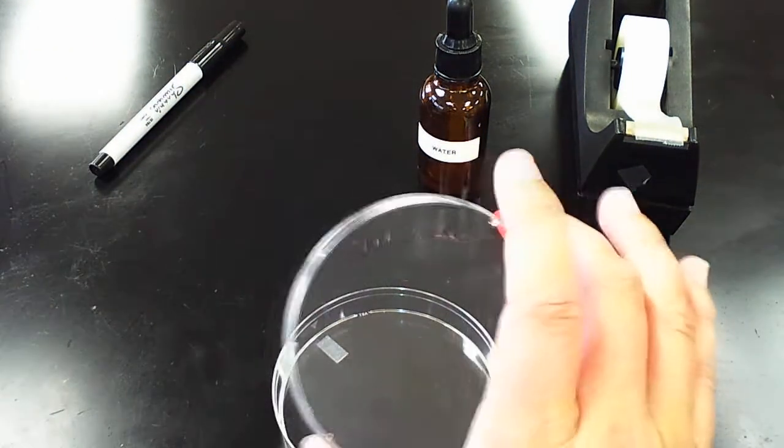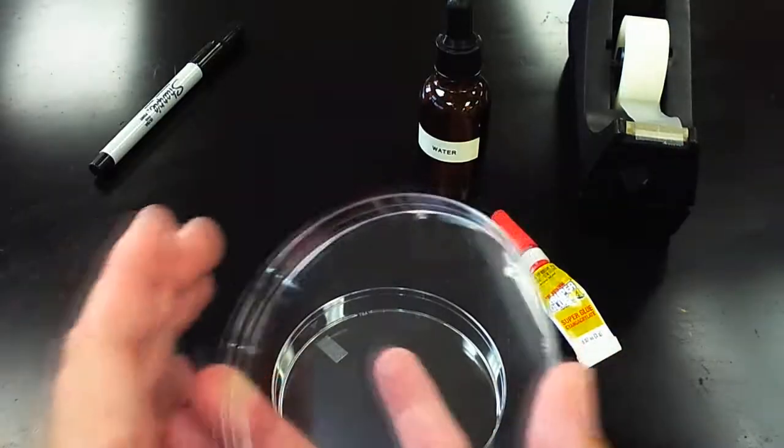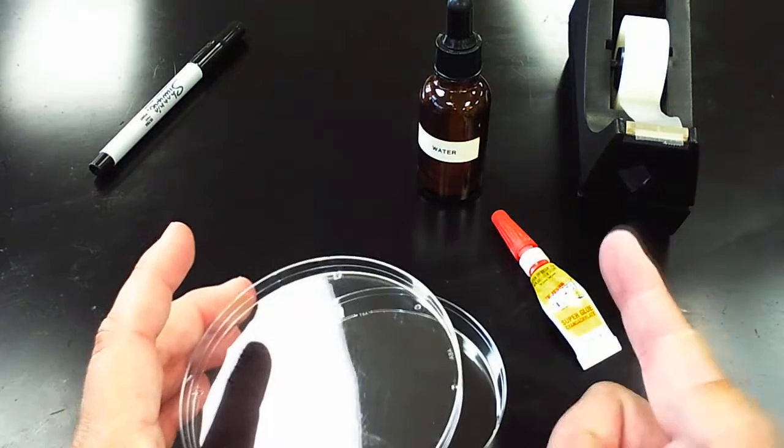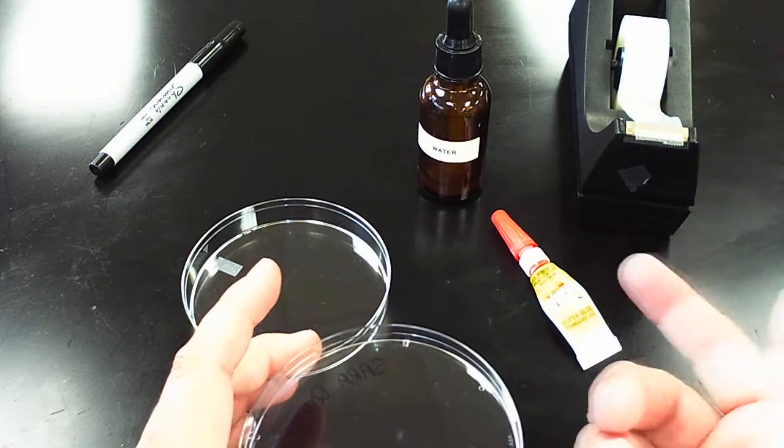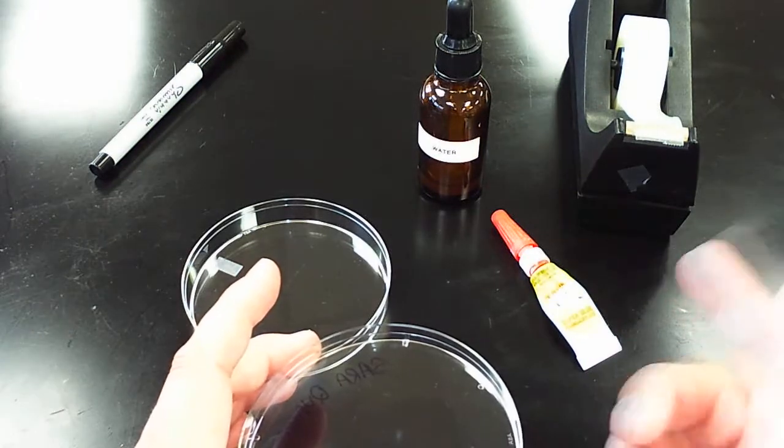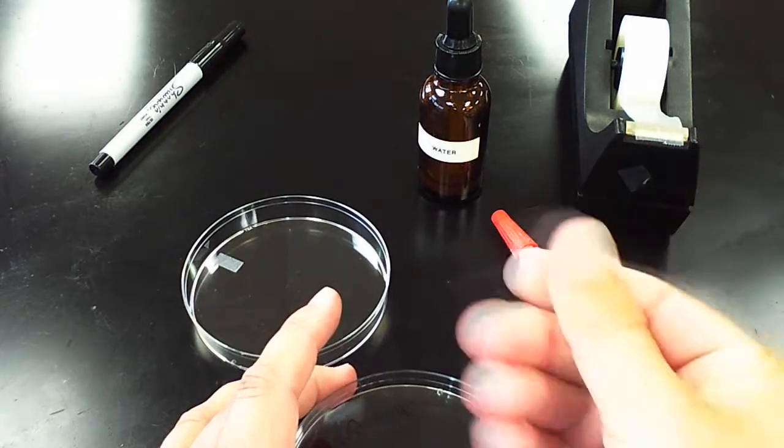Then on the inside of the lid, where I wrote the name, I'm going to turn it over and leave a fingerprint. Now in order for my fingerprints to show up really easily, it helps if I have a greasy fingerprint. So I'm going to rub my hands together a little bit,